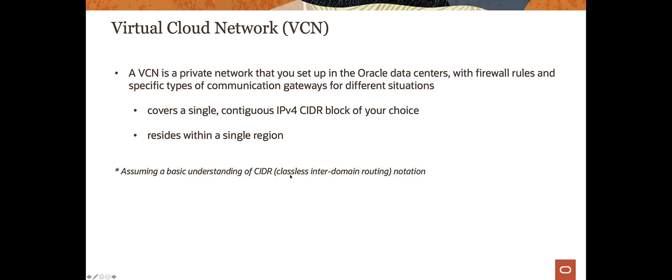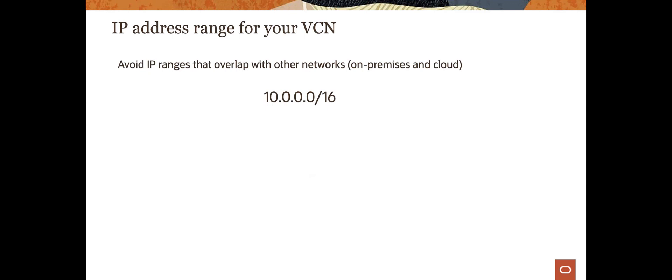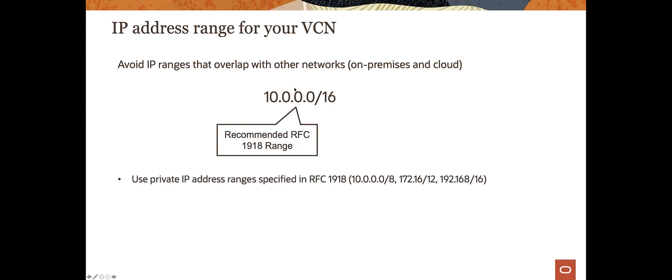CIDR stands for classless interdomain routing. You don't have to know this in depth to understand what you're doing here. When looking at IP addresses and ranges for your VCNs, best practice is to always avoid any overlap with any of your networks. If you're setting up on-premises and cloud, avoid them completely — try never to overlap those.